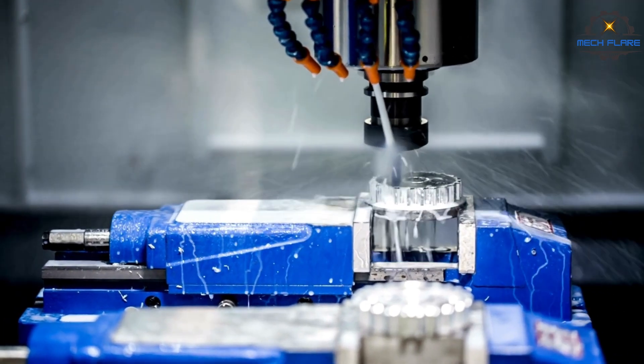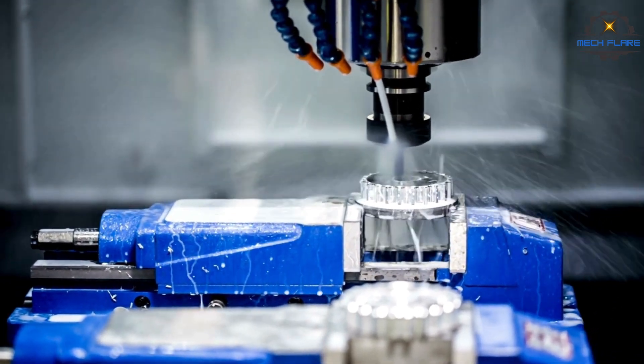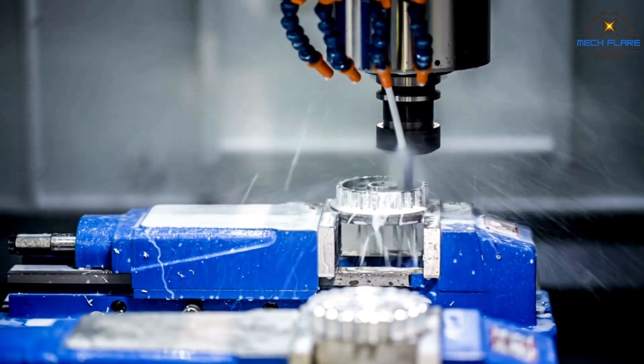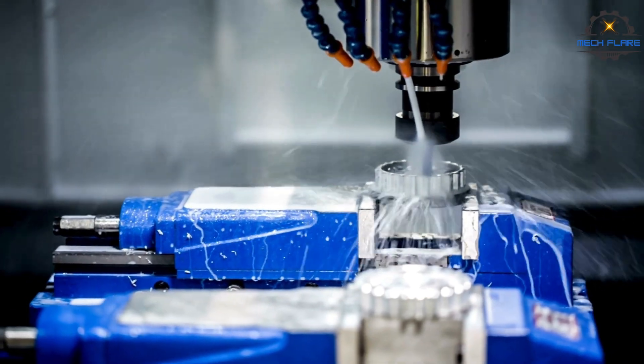In this video, we are going to discuss milling and its two basic types. Milling is a machining operation in which a work part is fed past a rotating cylindrical tool with multiple cutting edges.